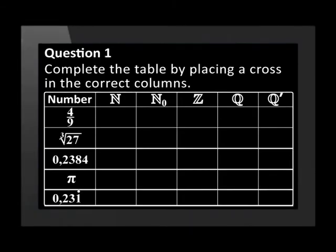Question 1 requires us to complete the table by placing a cross in the correct columns. The numbers listed are 4 over 9, cube root of 27, 0.2384, pi, and 0.231 recurring.